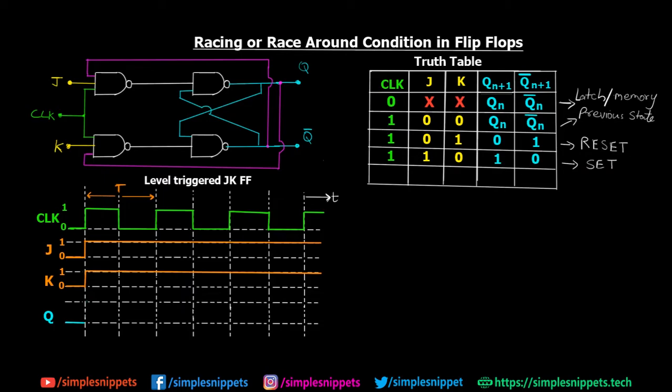If you've been watching this entire playlist, we've covered quite a lot of flip-flops — only master slave is left. In these sequential circuits we've talked a lot about race condition and how we need to avoid it because it is an undesirable condition. We never really talked in detail about what this race condition is and how it affects digital circuits.